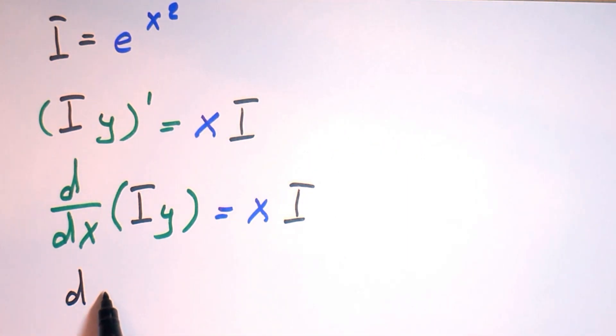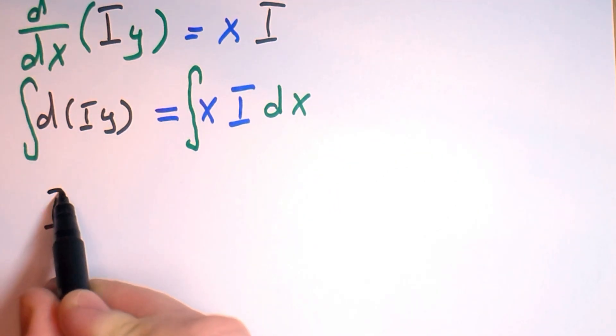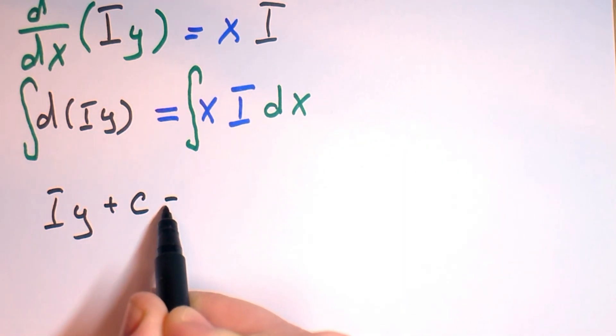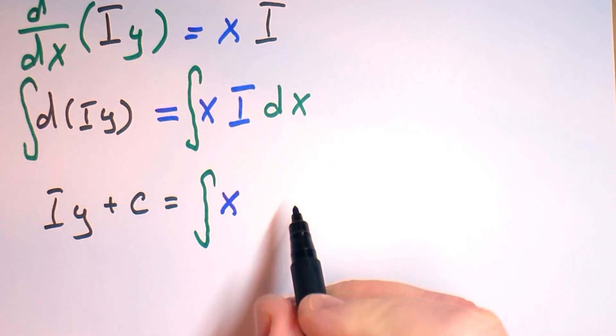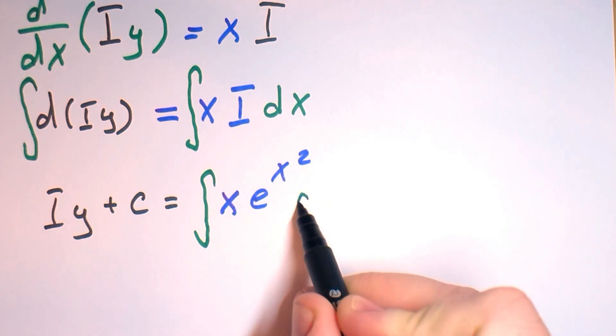So now d of Iy equals xI dx. Now again put the integration sign. And the left part will be Iy, and the right part will be integral of x times e to the power x squared dx.